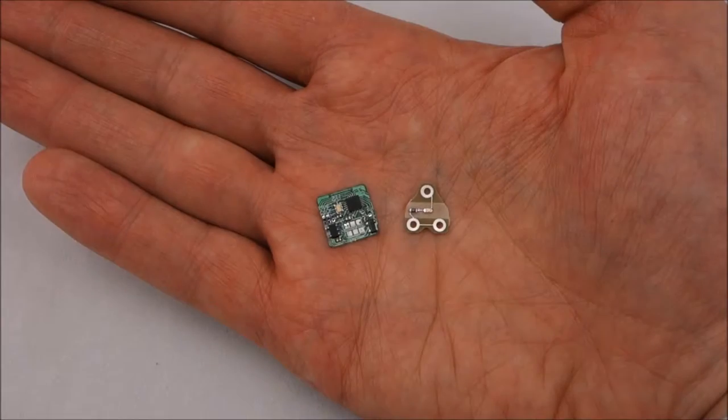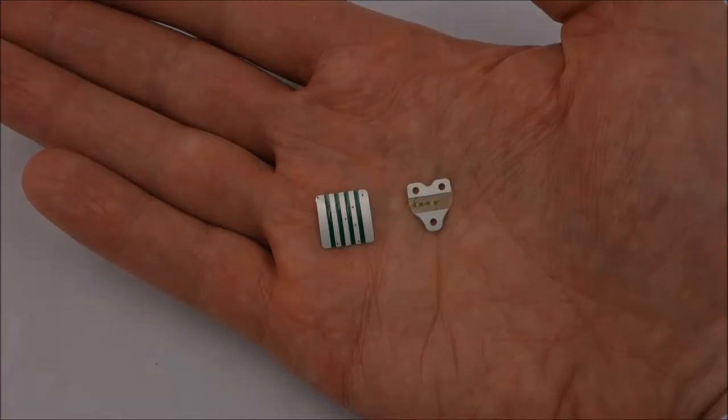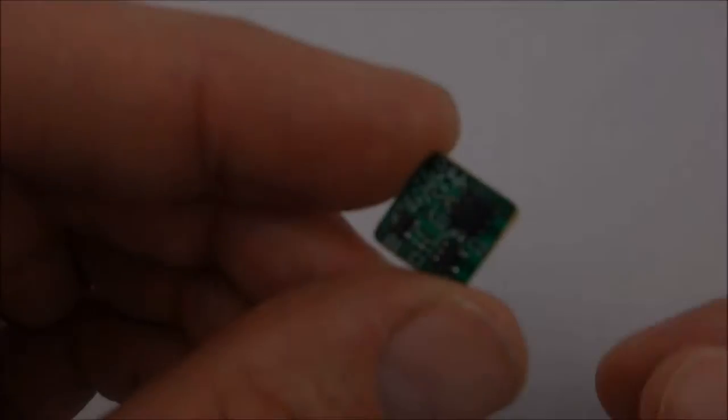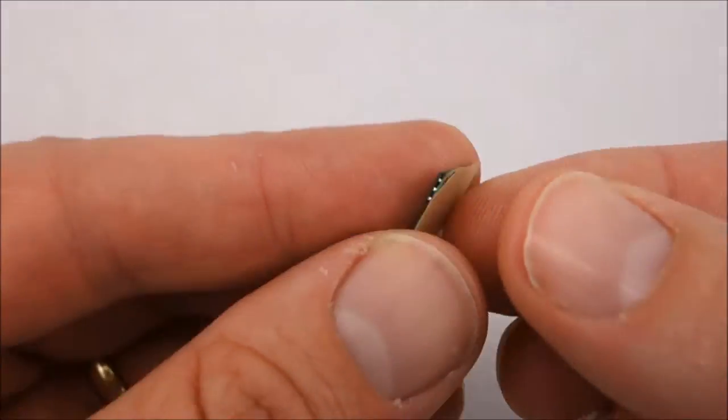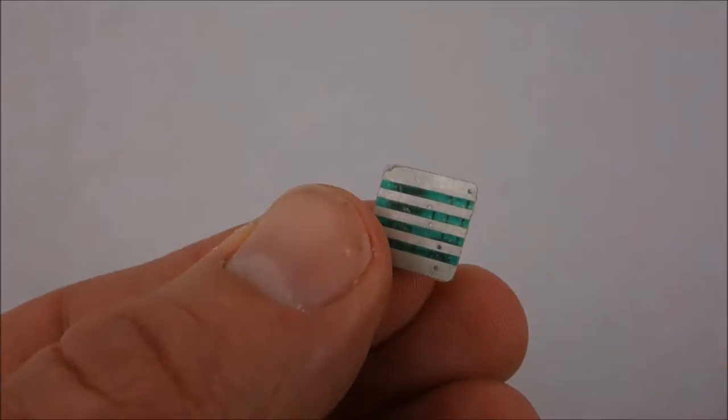On the underside of each one flat conductive pads provide electrical connectivity. Before use these pads are covered with a special type of double sided sticky tape which conducts electricity but only through its thickness not across the surface of the tape.